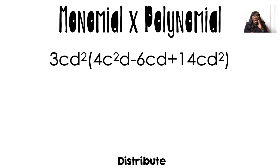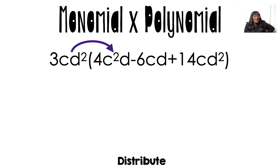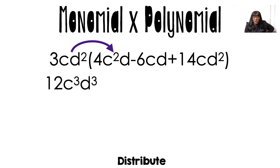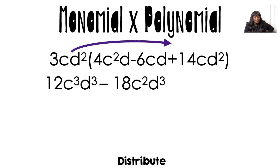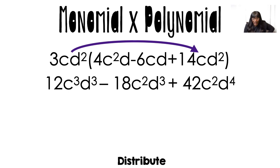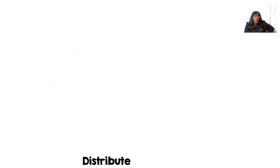This one has a lot of variables, so remember you have to do coefficients times coefficients, c's times c's, and d's times d's. So 3 times 4 gives me 12, c times c squared gives me c cubed, and d squared times d gives me d cubed. Moving to the middle: 3 times negative 6 is negative 18, c times c is c squared, and d squared times c gives d cubed. Then 3 times 14 is 42, c times c is c squared, and d squared times d squared is d to the fourth.